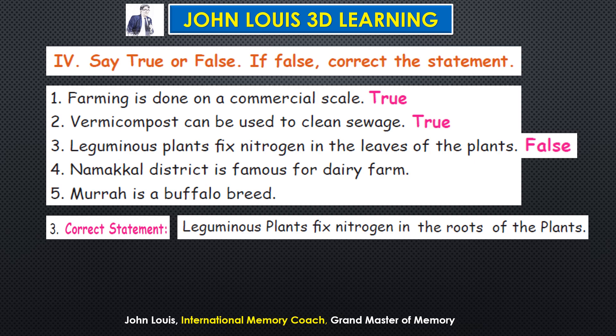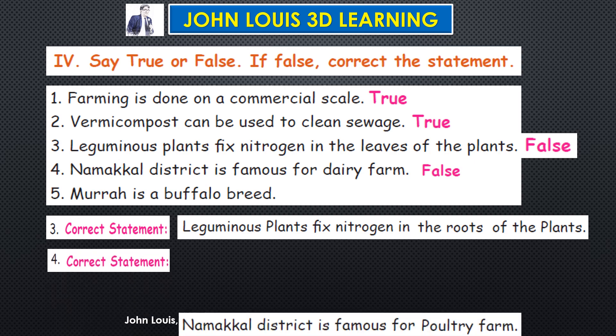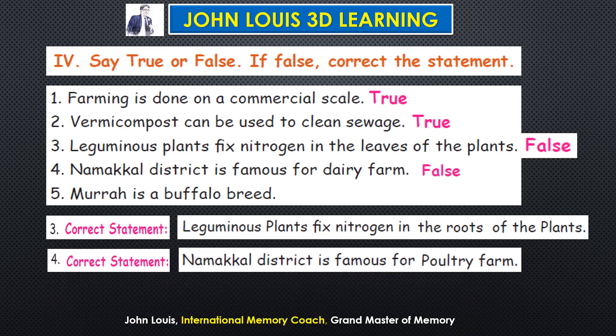Next true or false: Namakkal district is famous for dairy farm — this is False. Correct statement: Namakkal district is famous for poultry farm. Next: Murra is a buffalo breed — this is True.